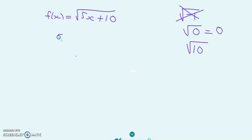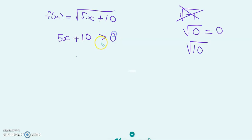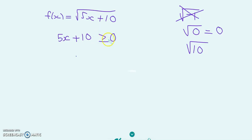So what that means is that the quantity underneath the square root, which is 5x plus 10, must be either positive or equal to zero. This means 5x plus 10 is greater than or equal to zero. That's the constraint — we require that the quantity inside the square root is greater than or equal to zero.